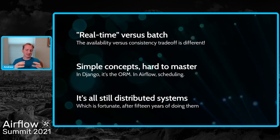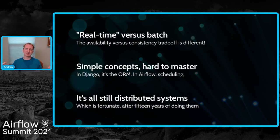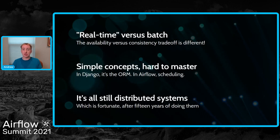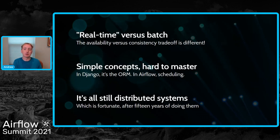Another part of that is simplicity versus complexity. Django and Airflow are both relatively simple concepts at a very high level - you can summarize what they try to do in a couple of sentences - but both have very difficult pieces hidden away. In Django, this is our ORM, our object-relational database mapper. The interface is beautiful and a pleasure to use, but beneath it is tens of thousands of lines of complex code with transactions and all those kinds of things inside it.